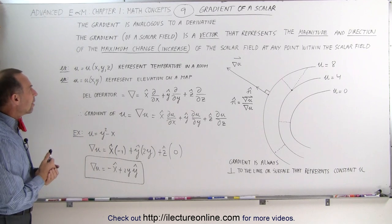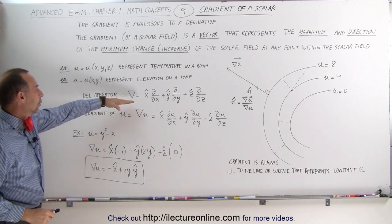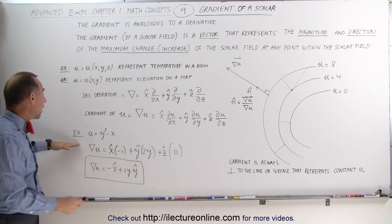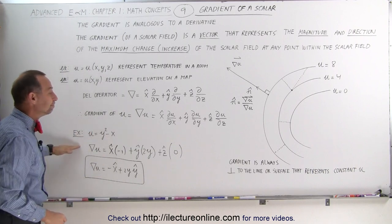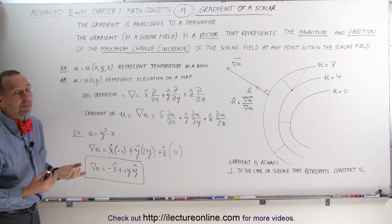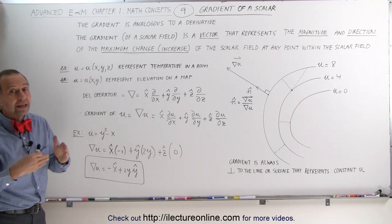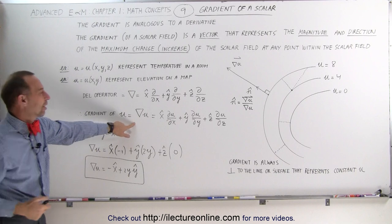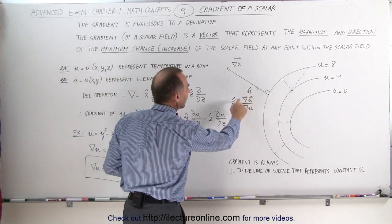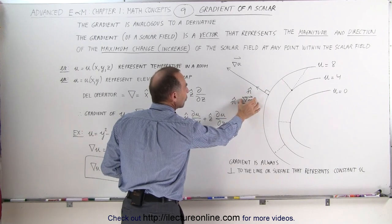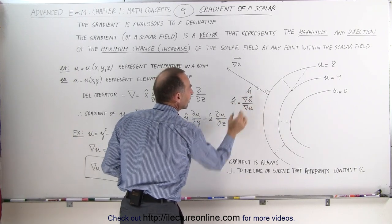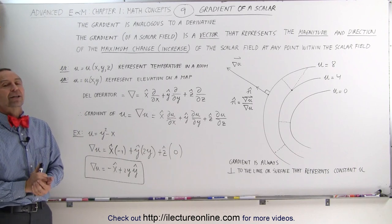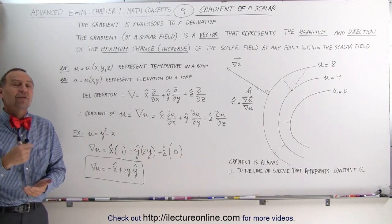That should be a good overview of the gradient of a scalar. Here you can see mathematically what the del operator looks like, and what it looks like when you take the gradient. Here you have an example of how to actually take the gradient of a scalar function, and a graphical representation showing that the gradient is always perpendicular to the surface. The magnitude is found by taking the gradient, and the unit vector direction is found by dividing the gradient by its magnitude. And that's what we mean by the gradient of a scalar quantity.